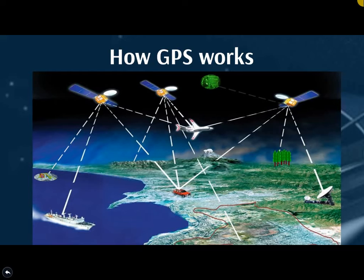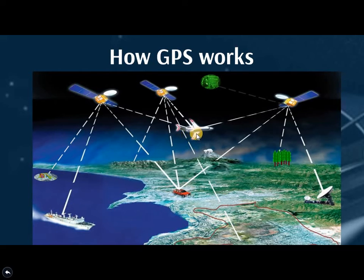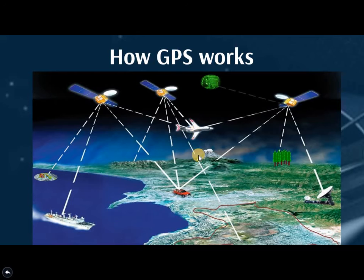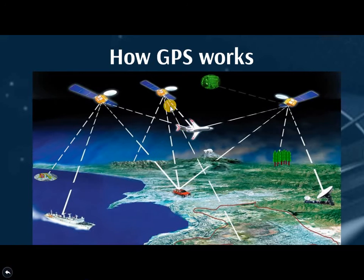GPS satellites continuously transmit data about their current time and position. The GPS receiver monitors multiple satellites and solves equations — called trilateration or triangulation — to determine the precise position of the receiver and its deviation from true time. A minimum of four satellites must be in view of the receiver to compute four unknown quantities: three position coordinates and a clock deviation from satellite time. You can see here that the satellites transmit the required information to users such as ships, vehicles, or aircraft equipped with GPS receivers.